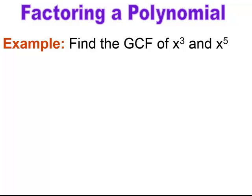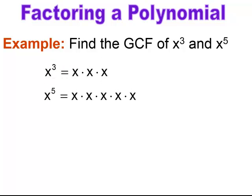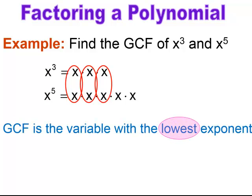When finding the GCF of variables with exponents, x to the third means multiplying x by itself 3 times, and x to the fifth means multiplying x by itself 5 times. The GCF has to be the highest common factor that divides evenly into both. The GCF for variables will always be the variable with the lowest exponent, because x³ can divide into both x³ and x⁵. So in this case the GCF would be x to the third.